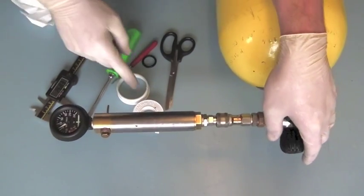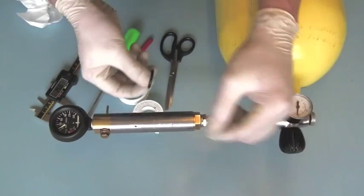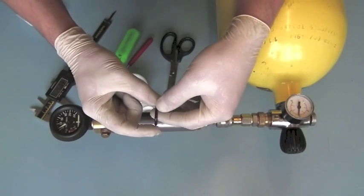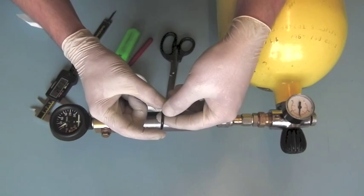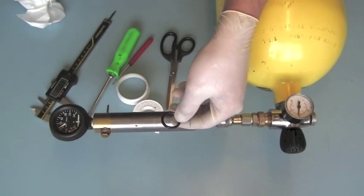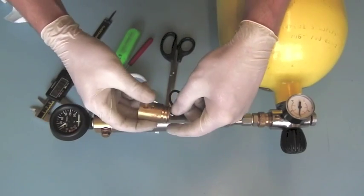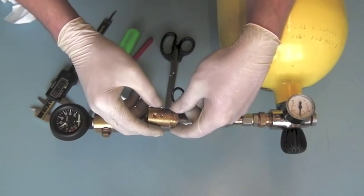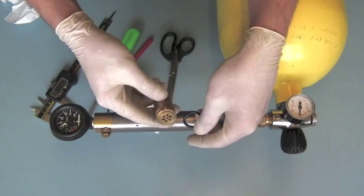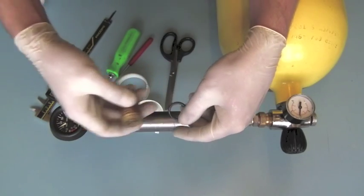So you can use the PTFE tape just to increase the size of the seal on the regulator body case, or as we looked at earlier, on the valve case of your FX, Theoban, BSA, whatever you like. But just by a fraction.